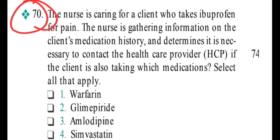Next: an NSAID question on ibuprofen (brufin), which we studied in the last nursing theory video. Key points about NSAIDs: they should not be taken with anticoagulants, they can cause hypoglycemia, and they can cause toxicity with calcium channel blockers. Question: If a patient is taking ibuprofen and you are gathering medication history, which other medications should you report to the HCP? Options: 1. Warfarin, 2. Glimepiride, 3. Amlodipine, 4. Simvastatin, 5. Hydrochlorothiazide. Select all that apply.